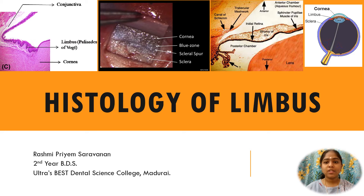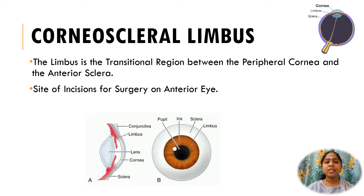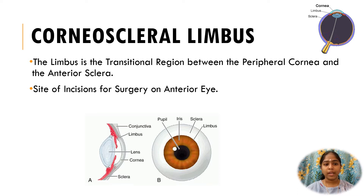Welcome to today's topic: Histology of Limbus. The limbus, or corneoscleral limbus, is a transitional region or junction between the peripheral cornea, or the corneal margin, and the anterior sclera. It is approximately 1 to 1.5 mm wide.